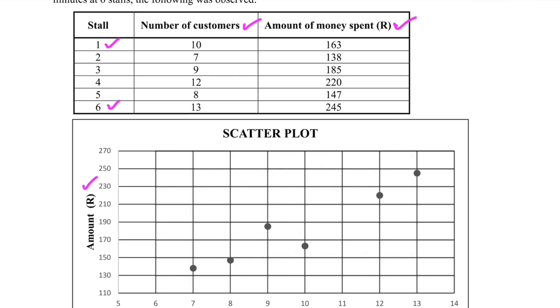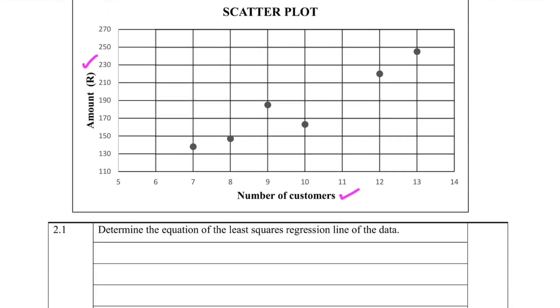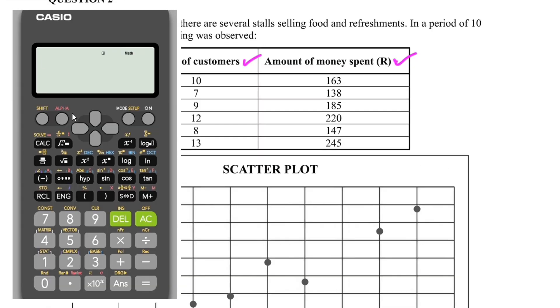On the x-axis we have number of customers, and on the y-axis we have the amount in rands. Question 2.1: determine the equation of the least squares regression line of the data. Obviously we're going to use our calculator here. We know fully well that y equals a plus bx. In order to find the value of a and the value of b, we need to use our calculator.